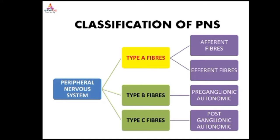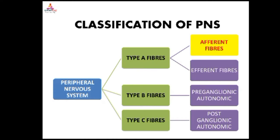Type A fibers are again divided into afferent and efferent fibers. Afferent fibers are grouped as Group 1, Group 2, and Group 3 fibers. Group 1 fibers include annulospiral endings of the muscle spindle (1A) and Golgi tendon organs (1B). Group 2 fibers come from flower spray endings of the muscle spindle, and from touch and pressure receptors. Group 3 fibers come from pain and temperature receptors. These afferent fibers are somatic sensory fibers.